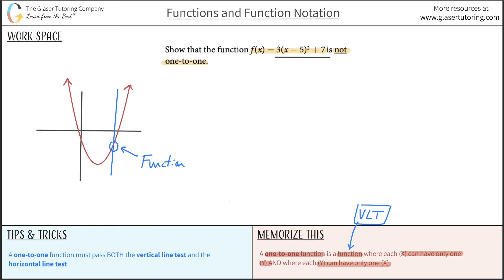So now we have a function. Let's see if it's a specific type of function called a one-to-one. So how do we do that? Now what we do is we do the horizontal line test. That's the horizontal line test.